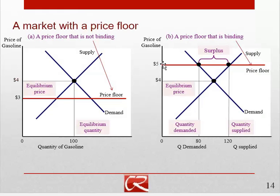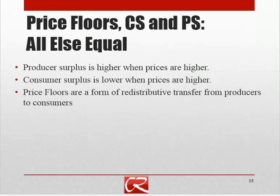Quantity supplied is going to be where that $5 price hits the supply curve. Some sellers who could not sell profitably at the equilibrium price of $4 get into the market. Notice that these sellers have costs above $4 — so we're bringing into the market a bunch of relatively inefficient, high-cost producers. All else equal, producers are going to benefit from higher prices, so producer surplus is higher when prices are higher.